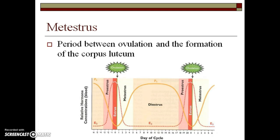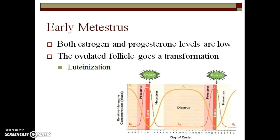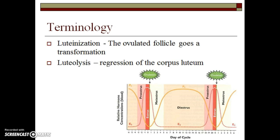Metestrus is the period between ovulation and the formation of the corpus luteum. During early metestrus, the levels of both estrogen and progesterone are low. During this time, the ovulated follicle is undergoing the transformation to become the corpus luteum — the process of luteinization is occurring. I want to make sure that you keep your terminology straight: luteinization is the time when the ovulated follicle becomes the corpus luteum, while luteolysis is the regression of the corpus luteum.